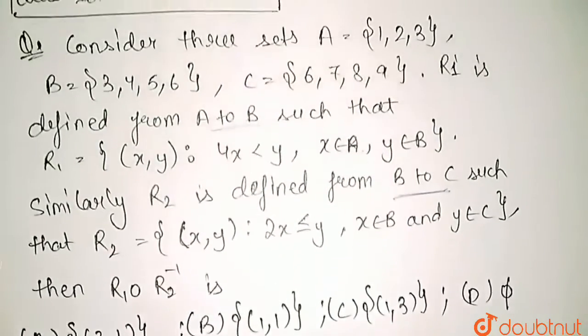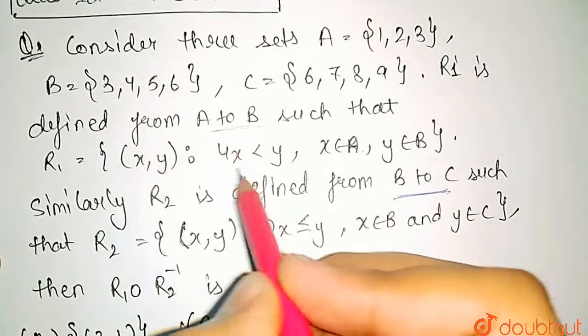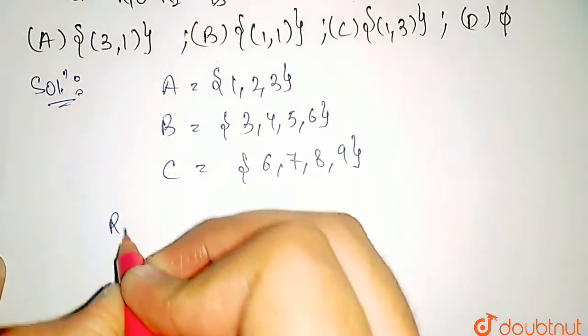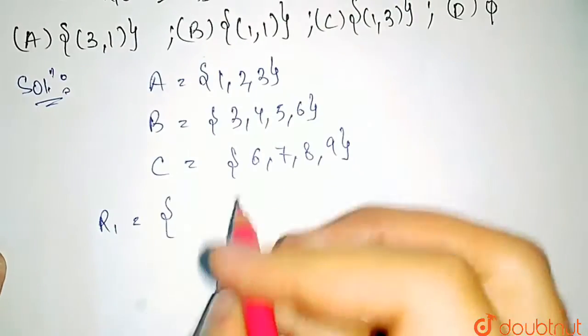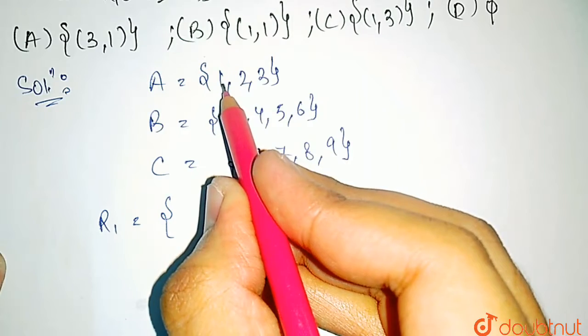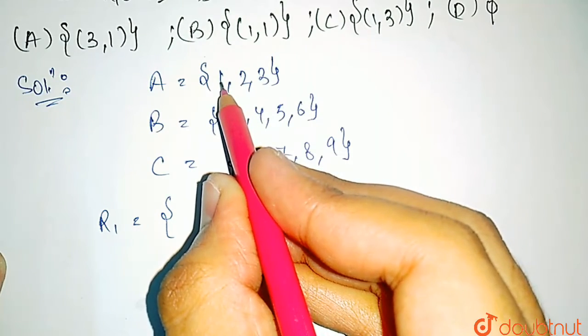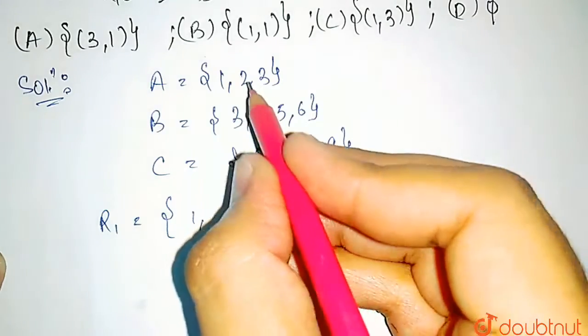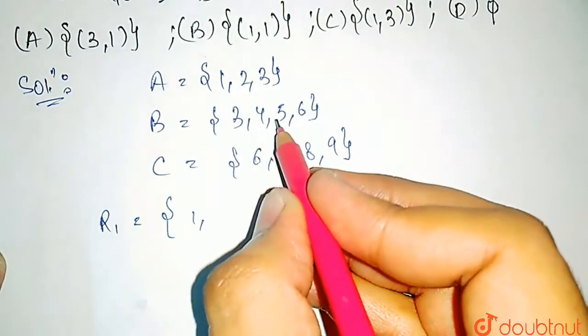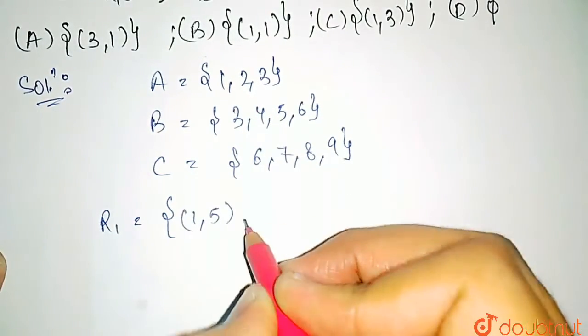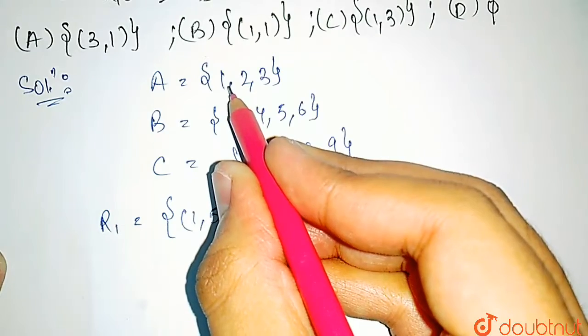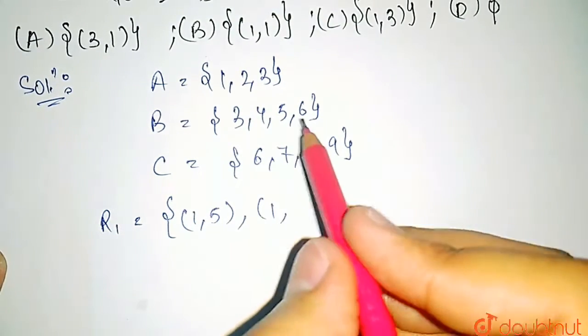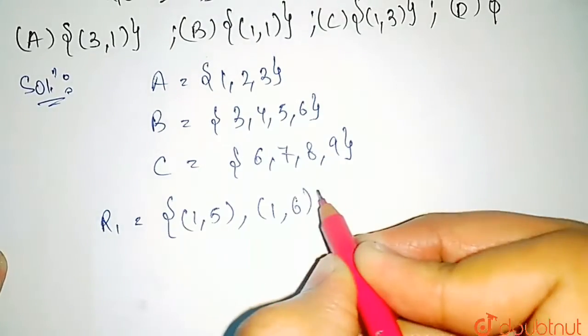Now, R1 was defined from A to B, 4x < y. So let us write the ordered pairs in R1. First of all, x belongs to A. So 4x ≤ y. So first pair would be (1,5) if 4x is 4. And similarly, if x is 1, 4 times x is 4 and 6 would be greater than it, so (1,6).